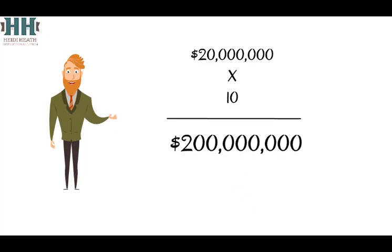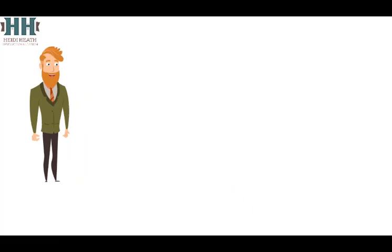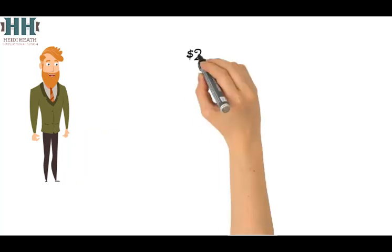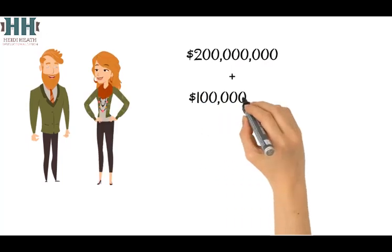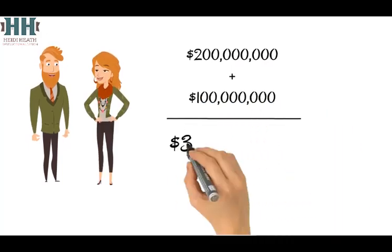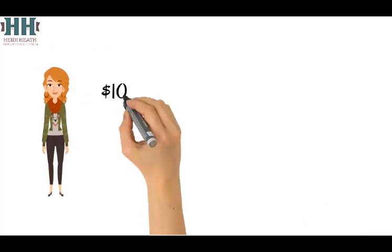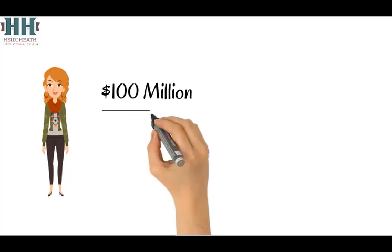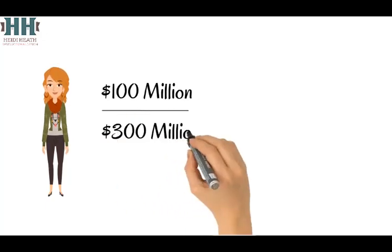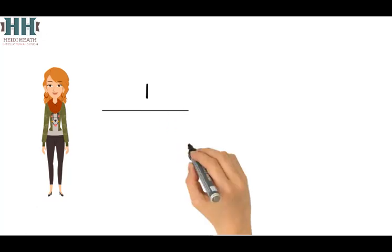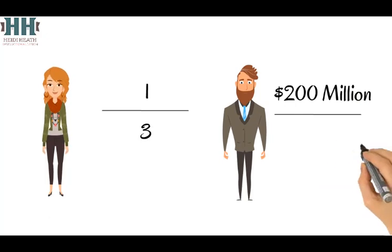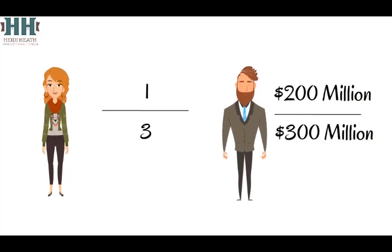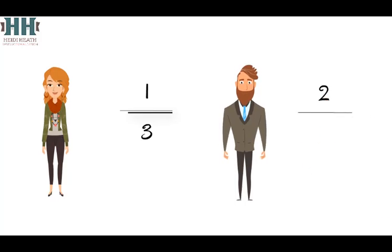Steve's equals 200 million in yearly sales, which is twice as much as Betty's. Total shoe sales for the region would be Steve's 200 million plus Betty's 100 million, or 300 million total. Betty's all-commodity value would equal her sales of 100 million over the total market's 300 million, or one-third ACV. Steve's ACV would be 200 million over 300 million, or two-thirds ACV.